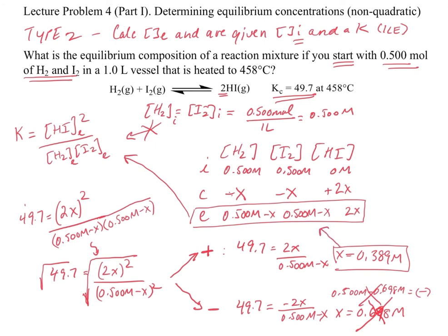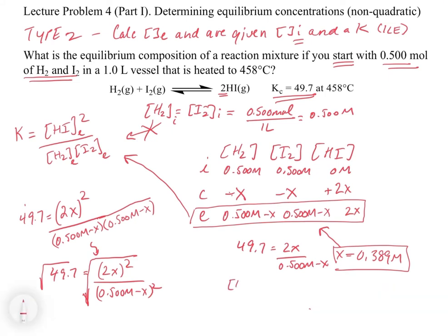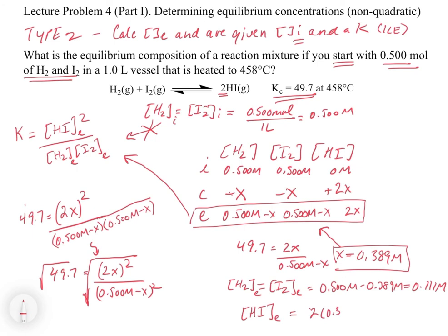Now we go back and plug X in. The question asks for the equilibrium composition of the mixture, so we solve for each species. The concentration of H2 and I2 at equilibrium equals 0.500 molar minus 0.389 molar, which gives 0.111 molar. The concentration of HI at equilibrium equals 2 times 0.389 molar, which gives 0.778 molar. This set of solutions gives you the equilibrium composition for all products and reactants based on this setup.